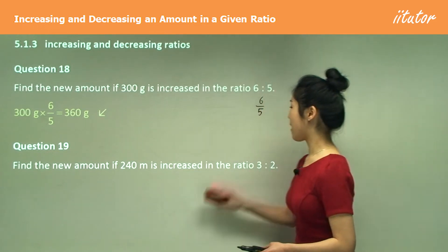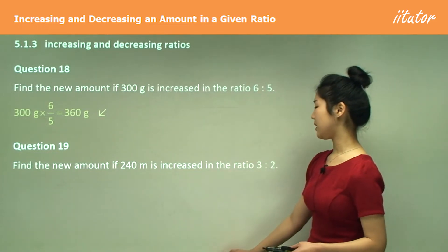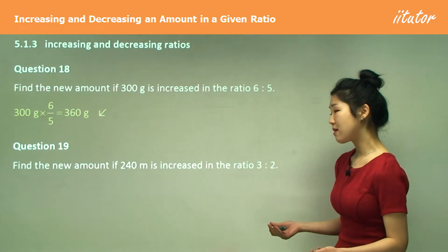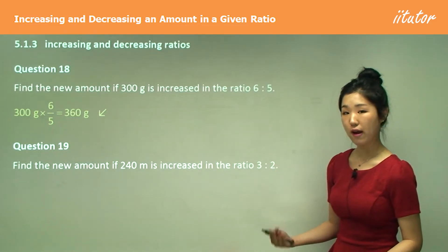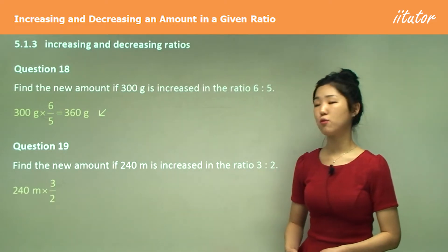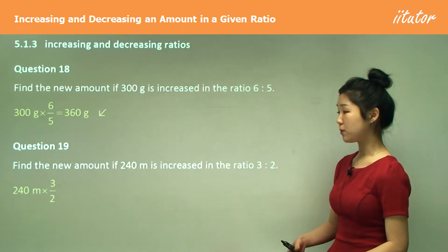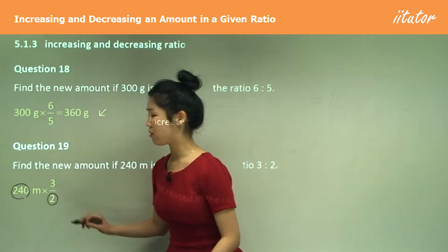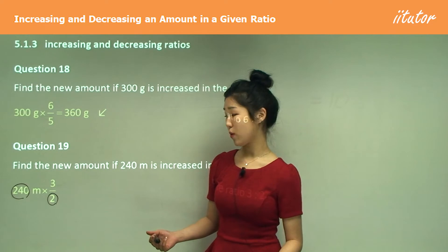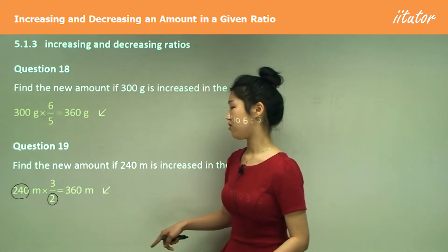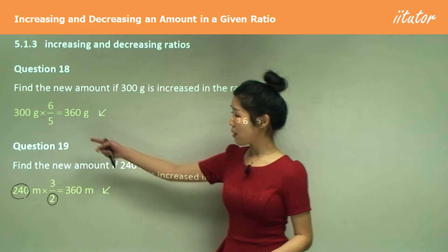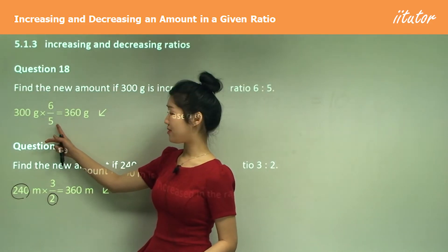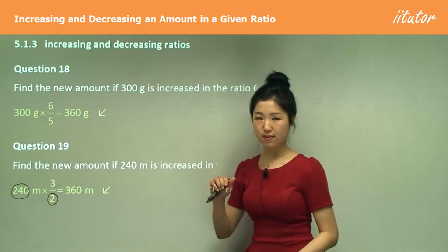Question 19: find the new amount if 240 is increased in the ratio 3 to 2. Now 3 to 2 is the same as 3 on 2 as a fraction. So all you need to do is multiply 240 meters by 3 on 2. Do 240 divided by 2, which is 120, then times by 3 to get 360. Same as before: 300 divided by 5 is 60, times 6 gives 360.